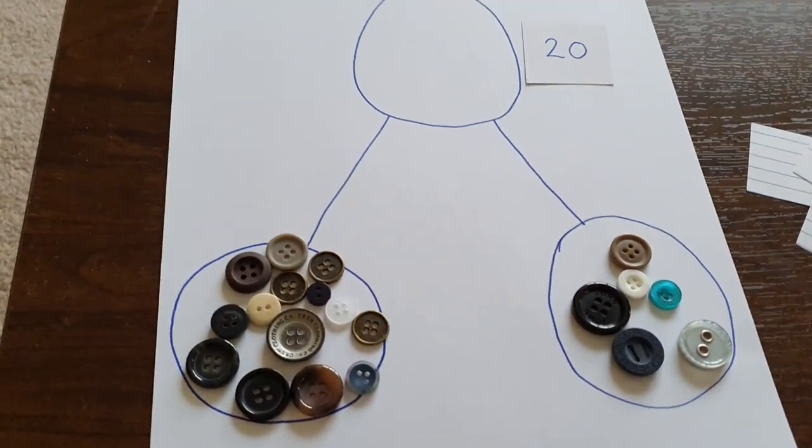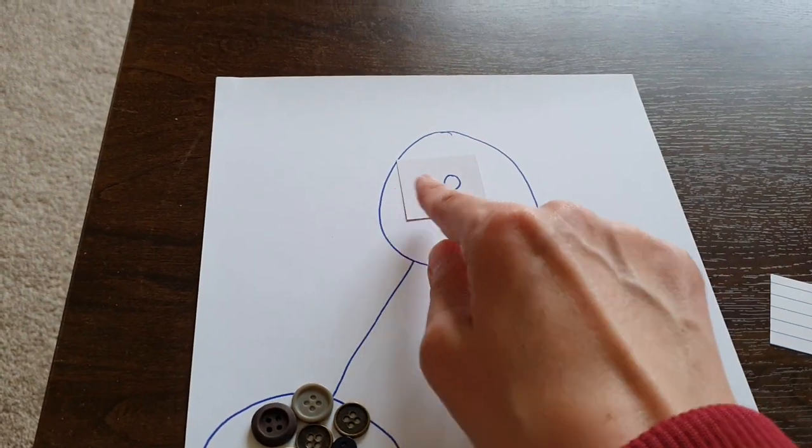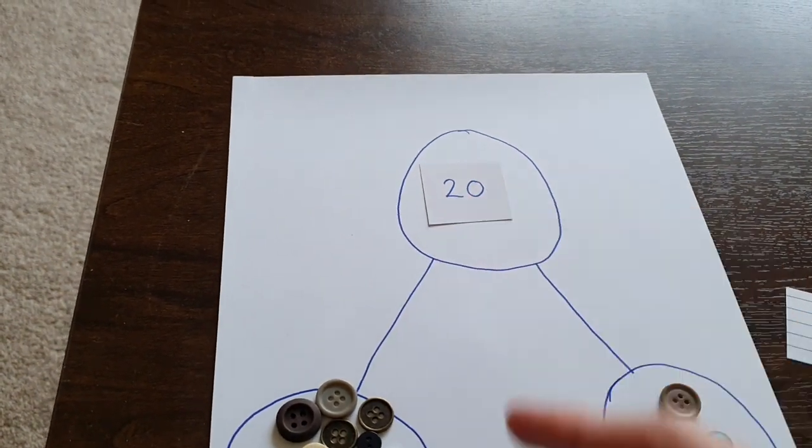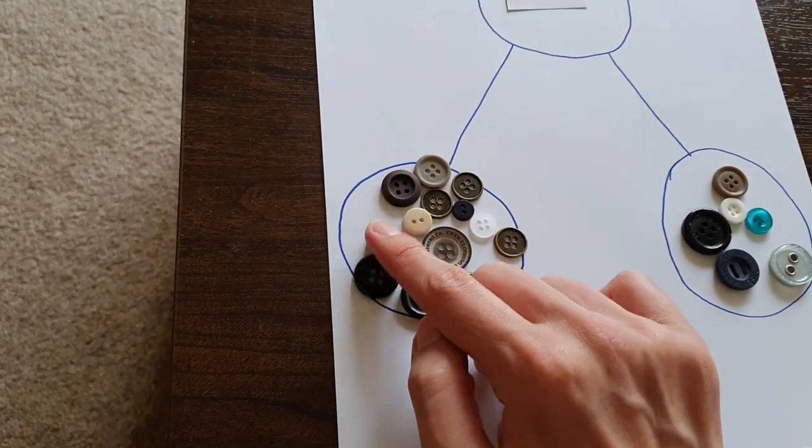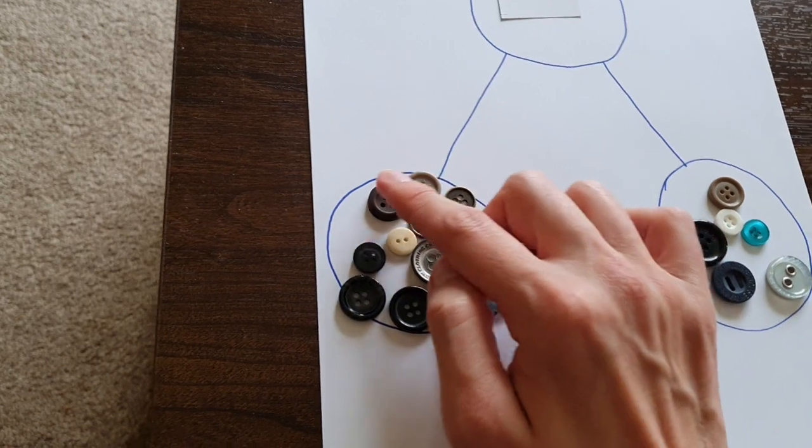So now I've got 20 as my whole, and I've got one part that is 1, 2, 3, 4, 5, 6, 7, 8, 9, 10, 11, 12, 13, 14.